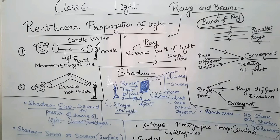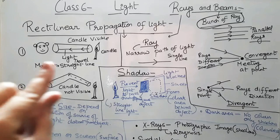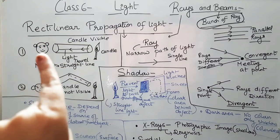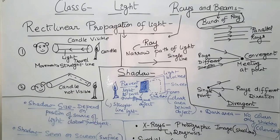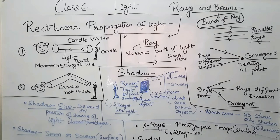Rectilinear propagation of light means the travelling or movement of light in a straight line. For example, if there is a tube and a candle is lit, you can view the candle through the straight pipe of the tube. But if the pipe is bent, you cannot see the candle — because light does not travel in any direction other than a straight line. Light always travels in a straight line.